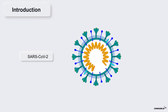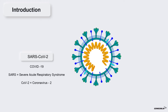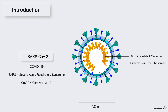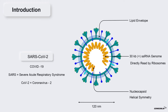SARS-CoV-2 is the causative agent for the COVID-19 disease. Here SARS stands for Severe Acute Respiratory Syndrome, and CoV-2 stands for Coronavirus 2. SARS-CoV-2 is 120 nm in diameter and contains a 30 kilobase positive sense RNA genome. Positive sense means it can be directly read by the ribosomes in the cells. This genome is coated by the nucleocapsid protein, which shows helical symmetry. This nucleocapsid-protected genome is encased in a lipid envelope derived from the host cell — a fatty layer which may disintegrate when it comes in contact with soap, killing the virus.